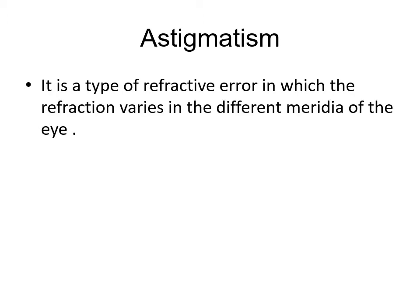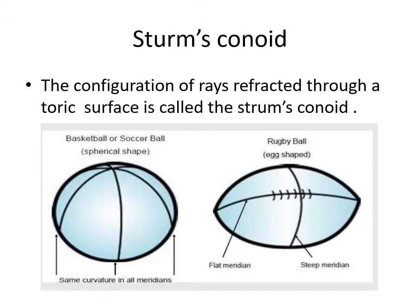Astigmatism is a type of refractive error in which the refraction varies in different meridians of the eye. In this picture, you can see the configuration of rays refracted through a toric surface, which forms Sturm's conoid. If the corneal surface is like a spherical one — just like a basketball — it has the same curvature in all meridians.